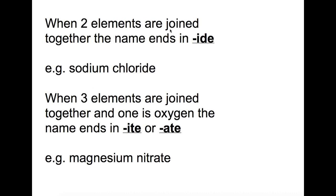When three elements are joined together and one is oxygen, the name ends in ITE or ATE, for example magnesium nitrate containing magnesium, nitrogen and oxygen.